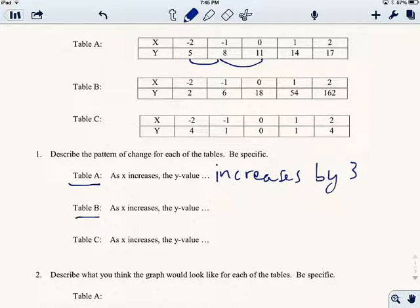So it increases by 3 every time. Table B now, as X increases, what happens to the Y value? Well, it looks like on this one, the Y value is multiplying by 3 every time. So as X increases, the Y value is multiplied by 3. Sorry about the handwriting.